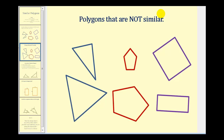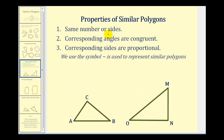Now let's talk about the properties of similar polygons. First, similar polygons must have the same number of sides, and that should be pretty straightforward — there's no way a triangle is going to be similar to a rectangle, pentagon, and so on. These next two properties are key: number two, the corresponding angles are congruent. This idea of corresponding parts is extremely important when working with similar polygons.